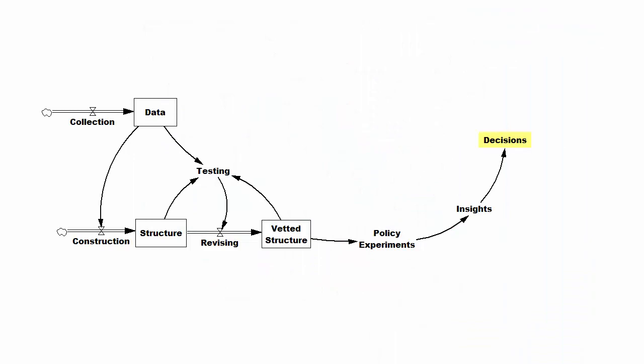So now I'll build up my view of the universe in several layers. It starts with this supply chain view of the problem. You collect some data, you build a model to interpret it, so it's a process of constructing structure, testing it against the data to get vetted structure. Once you have some confidence in what you're doing, you run policy experiments which generate insights and inform your decisions.